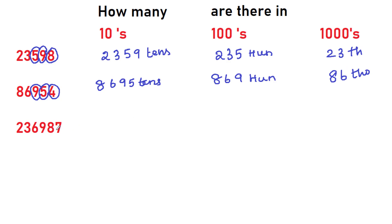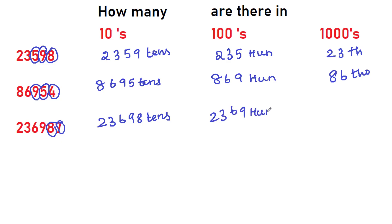Same way for this next number. Leave one digit and write the rest: 23,698 tens. Leave two digits and write for hundreds: 2,369 hundreds. Next, for thousands, you are going to leave three digits — it is 236 thousands.